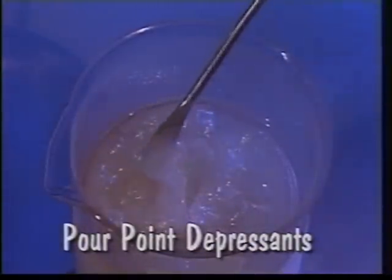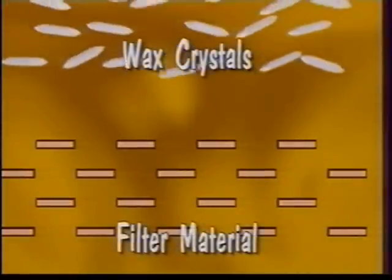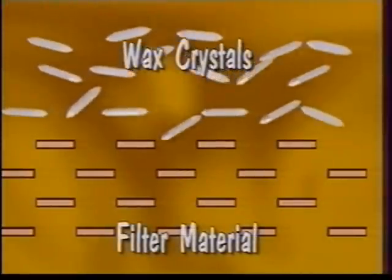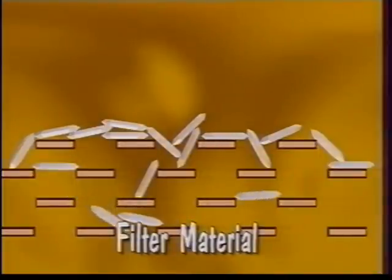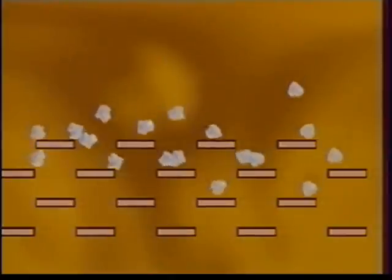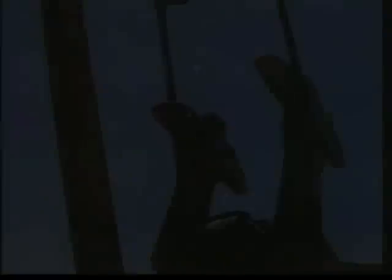Pour point depressants control paraffinic wax crystal formation at low temperatures by interrupting crystal growth and are especially useful in lubricating oil and fuels. Reducing crystal size and altering their shape maintains proper lubricant viscosity and flow, important for sub-zero startup capabilities.